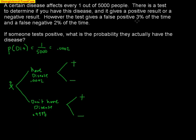One issue is a false positive 3% of the time. A false positive is a positive that's wrong. This positive branch — where you're positive and you have the disease — is a true positive. The false positive is this other branch: positive when you don't have the disease. That's the .03. So the probability of a true negative — a negative when you don't have the disease — would be .97.